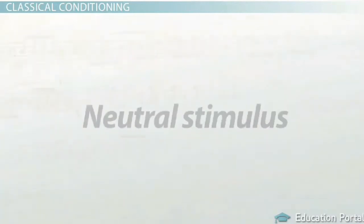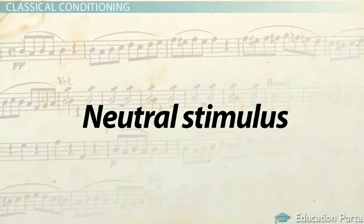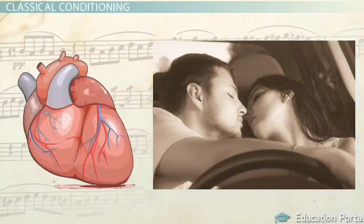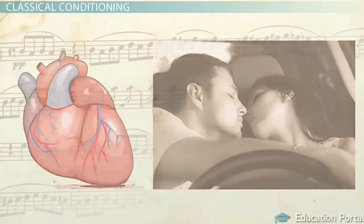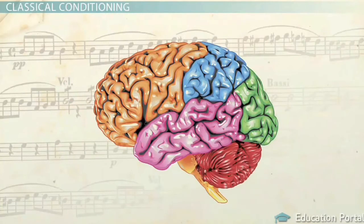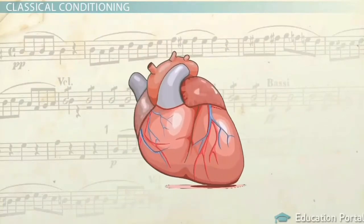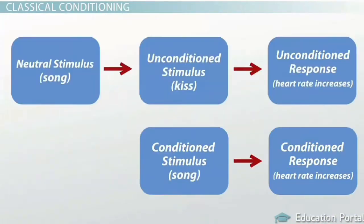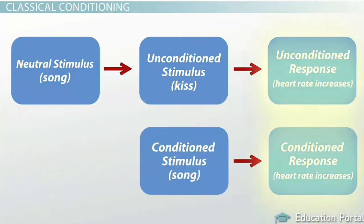In classical conditioning, you add a neutral stimulus to the experience — it's called neutral because it's not associated with the unconditioned response. In our kiss example, imagine your favorite song is playing when you kiss; the song is the neutral stimulus. After repeated pairing of the song with kissing, your brain starts to associate the song with kissing, and the song becomes a conditioned stimulus because it produces a response with or without the occurrence of kissing.